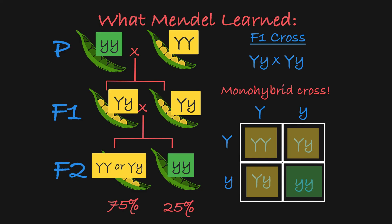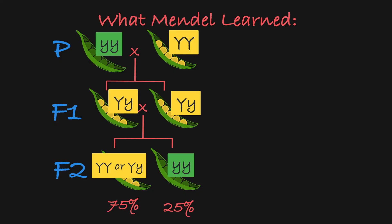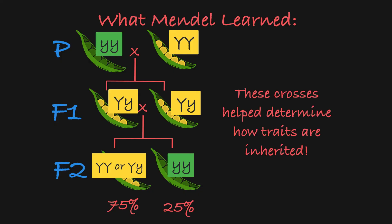So as you can see, from analyzing these three generations of pea plants, Mendel was able to determine some key aspects of inheritance. Pretty amazing stuff! Those are the basics of Gregor Mendel's classic crosses. If you'd like to dig deeper into the monohybrid cross, see my video on monohybrid crosses.